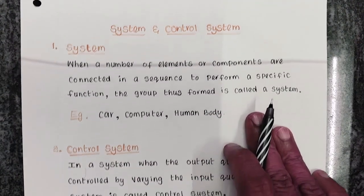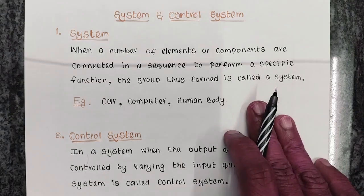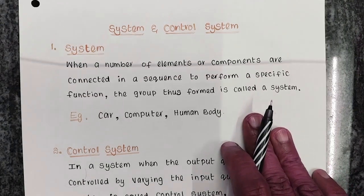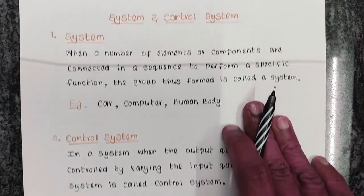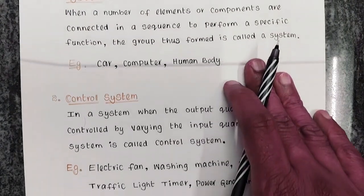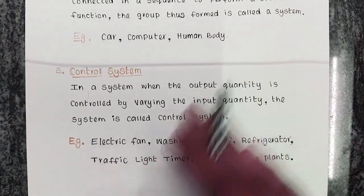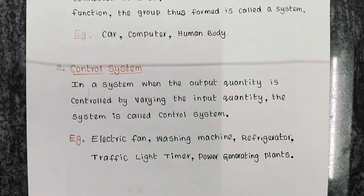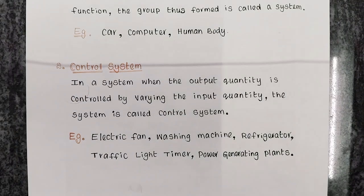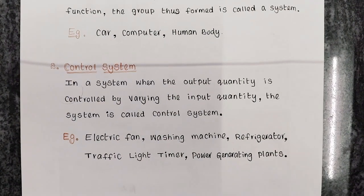And now let us see what is a control system. In a system, when the output quantity is controlled by varying the input quantity, the system is called a control system.